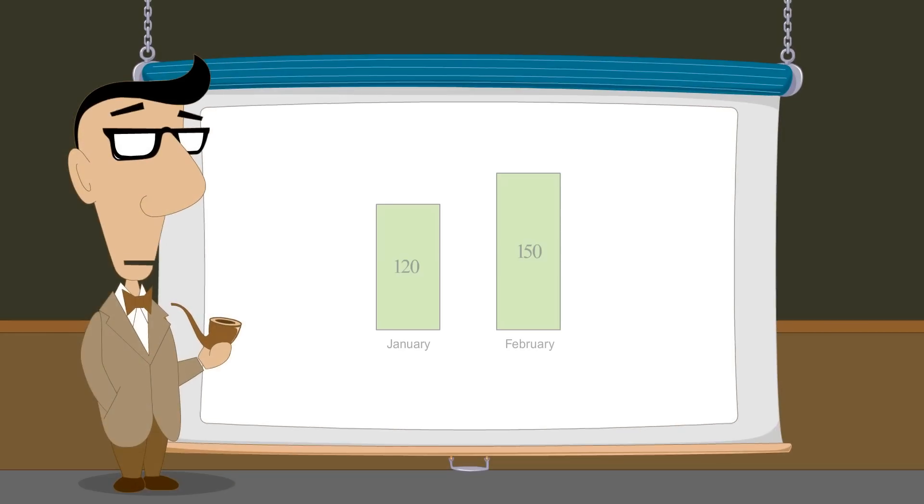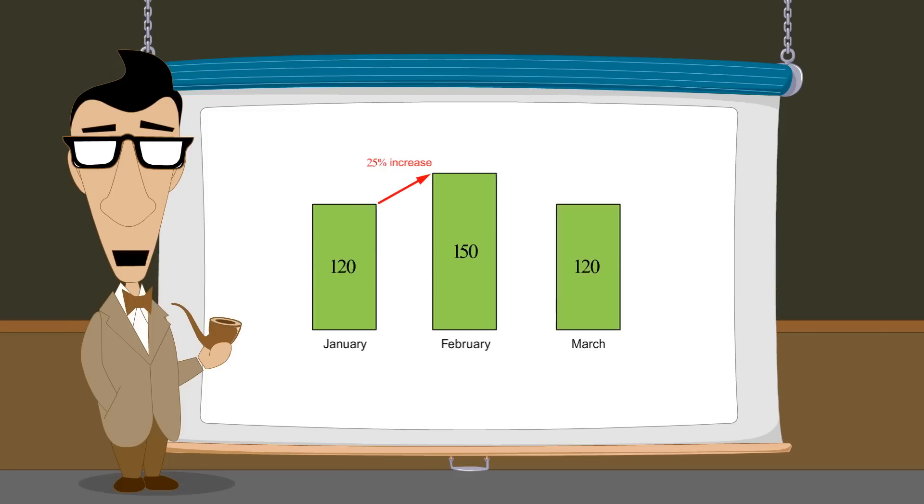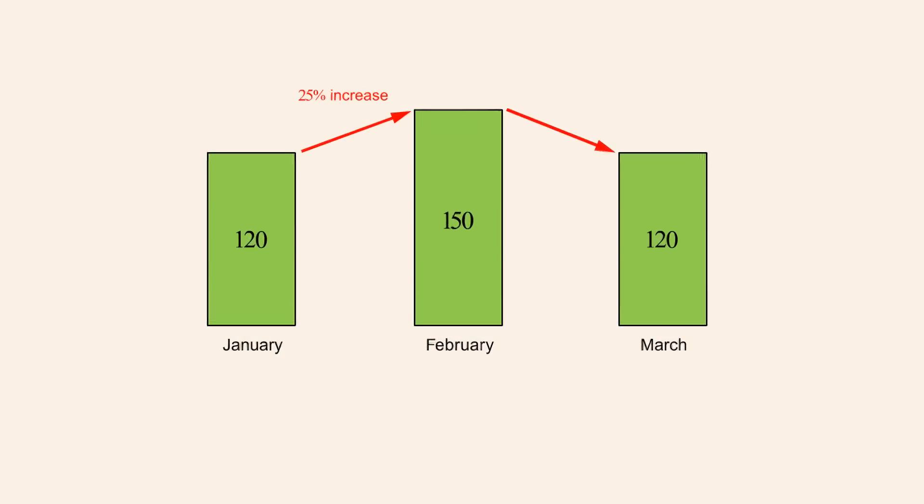This change represents a 25% increase from January to February. If in March, the number of accidents returns to the previous amount, what percentage decrease from the accidents in February does this represent? Since the change from February to March is the same size as the change from January to February, it might be tempting to say that this change will also be 25%. However, this is not the case.